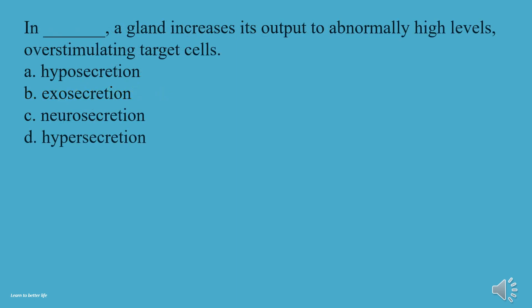In what condition does a gland increase its output to abnormally high levels, over-stimulating target cells? A, Hyposecretion. B, Exosecretion. C, Neurosecretion. D, Hypersecretion. The answer is D, Hypersecretion.